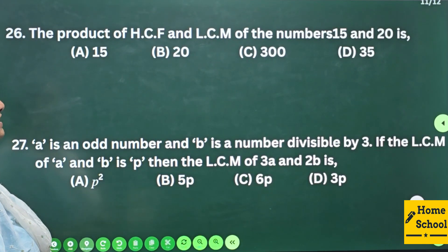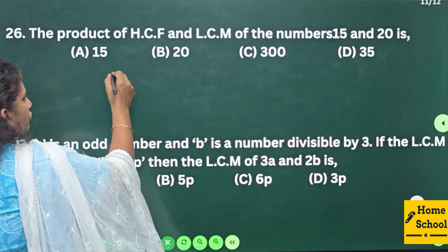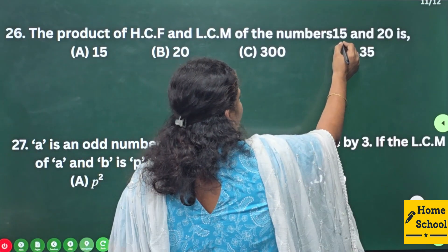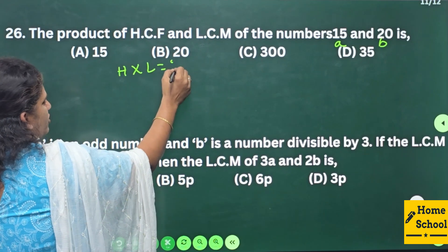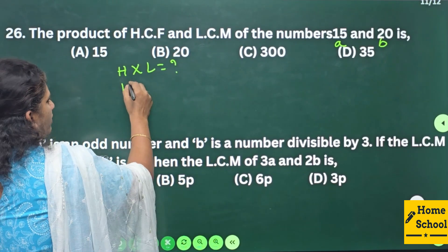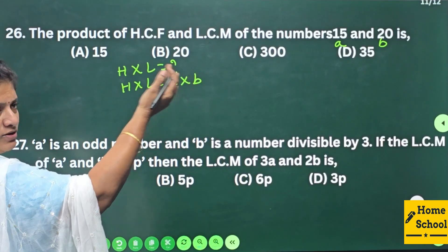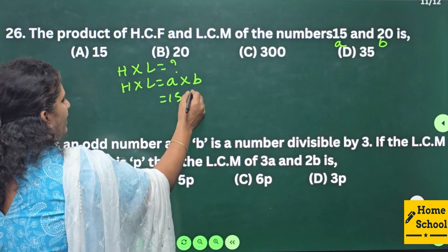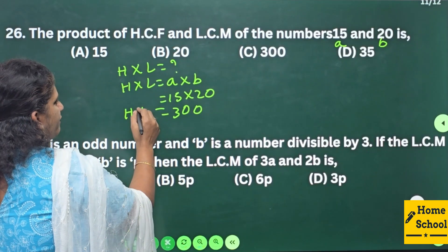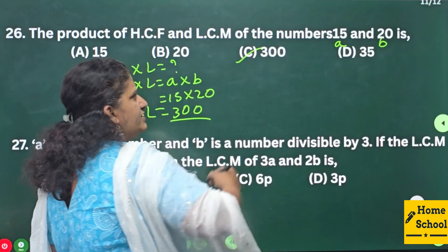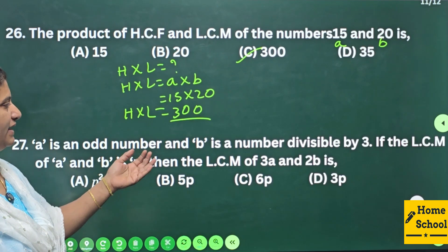Question 26: The product of HCF and LCM of the numbers 15 and 20 is — let the two numbers be a and b. We know H × L = a × b. The product of those two numbers is your answer: 15 × 20 = 300. Product of HCF × LCM = 300. Your answer is option C: 300.